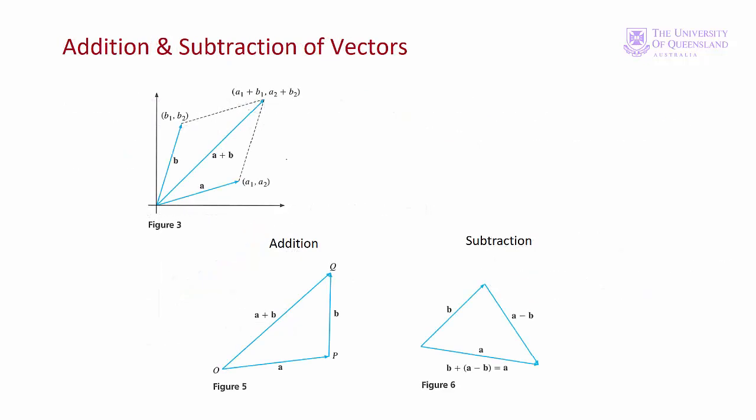There's a geometric interpretation to vector addition and subtraction. Geometrically if we add two vectors, vectors A and B, that's equivalent to moving to point A1 A2 and then adding on B, or going to point B1 B2 and then adding on A.